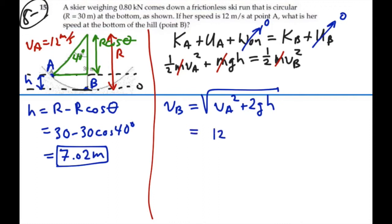So that's going to equal 12 squared plus 2 times 9.8 times 7.02, all square root. And that equals 16.78, or we'll say 16.8 meters per second.